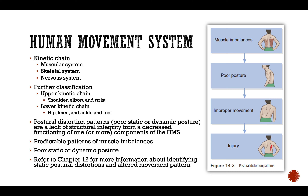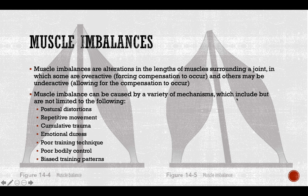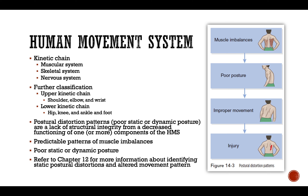The upper kinetic chain includes shoulder, elbow, and wrist; the lower includes hip, knee, ankle, and foot. These kinetic chains can cause muscular imbalances, which lead to poor posture, which leads to improper movement patterns, which eventually leads to injury. This is what we call postural distortion patterns — when muscles become imbalanced, they cause postural change, then movement change, then injury due to that cumulative effect.